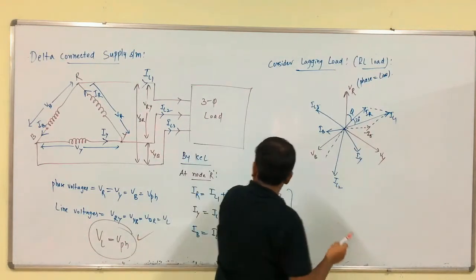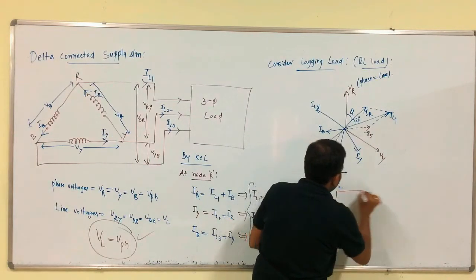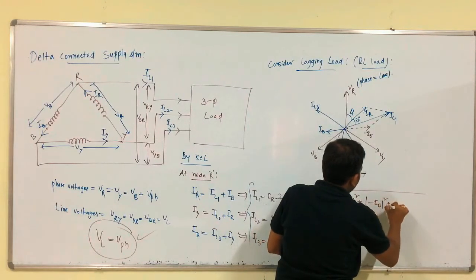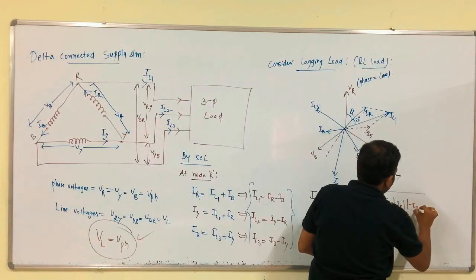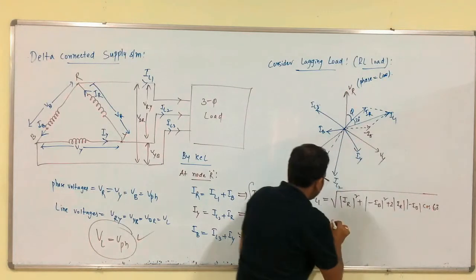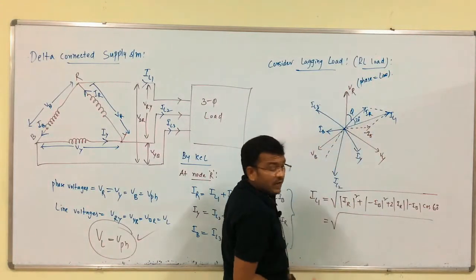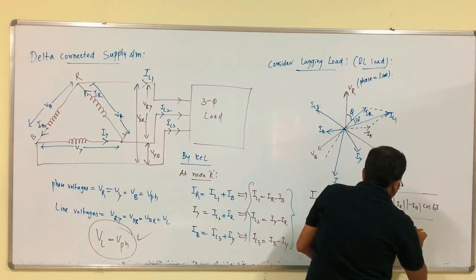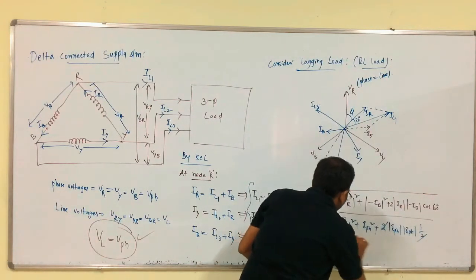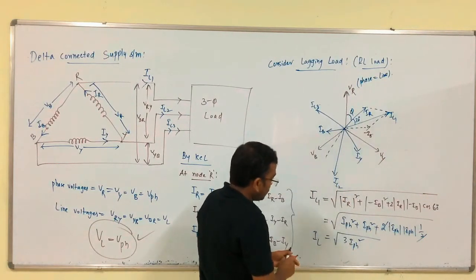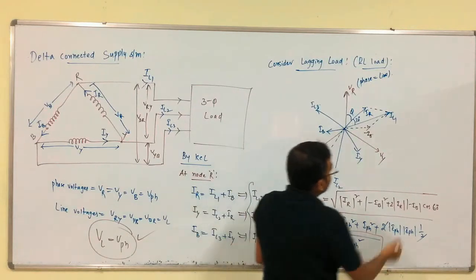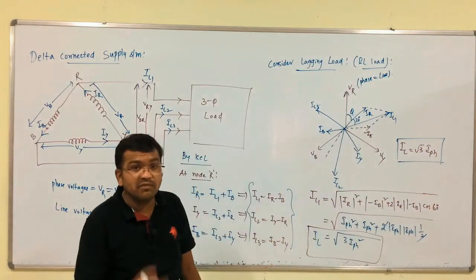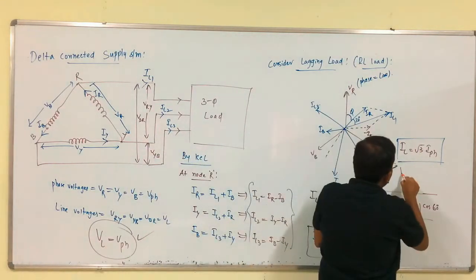From the phasor diagram, I_L1 = √(|I_R|² + |I_B|² + 2|I_R||I_B|cos60°). Since I_R = I_B = I_phase and cos60° = 1/2, this simplifies to √(3 × I_phase²) = √3 × I_phase. So I_L = √3 × I_phase. Comparing: in the star system V_L = √3 × V_phase; in the delta system I_L = √3 × I_phase and V_L = V_phase.